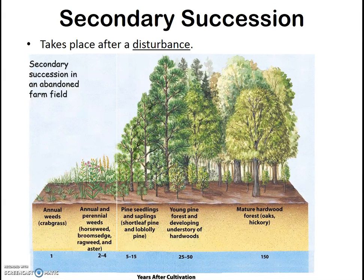A favorite example is a logging event or a fire event in a mature forest that opens up part of the forest to more intense sunlight. Species that can survive in intense sunlight are able to out-compete the shade-tolerant species of the mature forest. In closing, ecological communities change over time, and that process is called ecological succession.